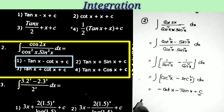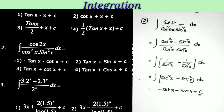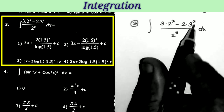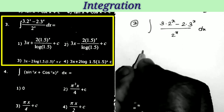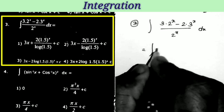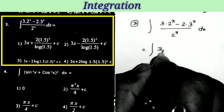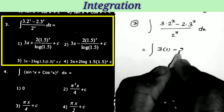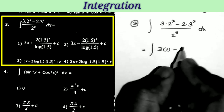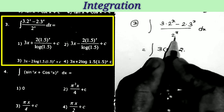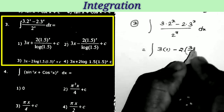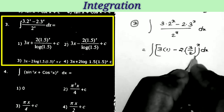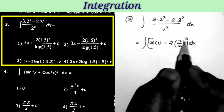Next question: integral of (3·2^x − 2·3^x) / 2^x dx. This equals — separating the denominator: 2^x / 2^x = 1, minus 2 times — again separating: 3^x / 2^x = (3/2)^x. So 3^x / 2^x in common power form equals (3/2)^x.